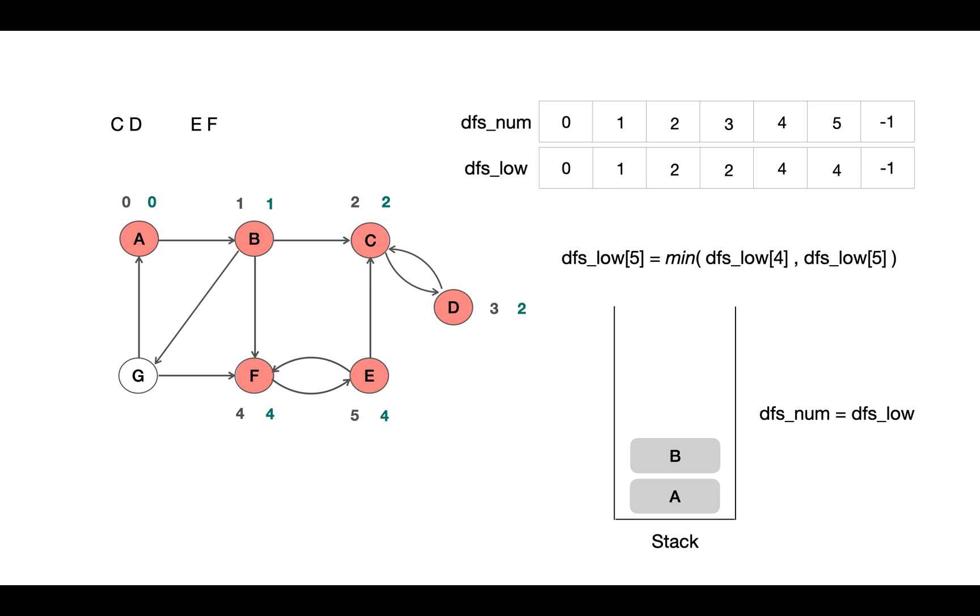Now there's one node left to explore from B. We traverse G and from G we can go to A. But A is already visited, so we update the min low value for G which will be 0. For this, DFS_num is 6 which is not equal to 0, so it's not the starting point of the SCC.